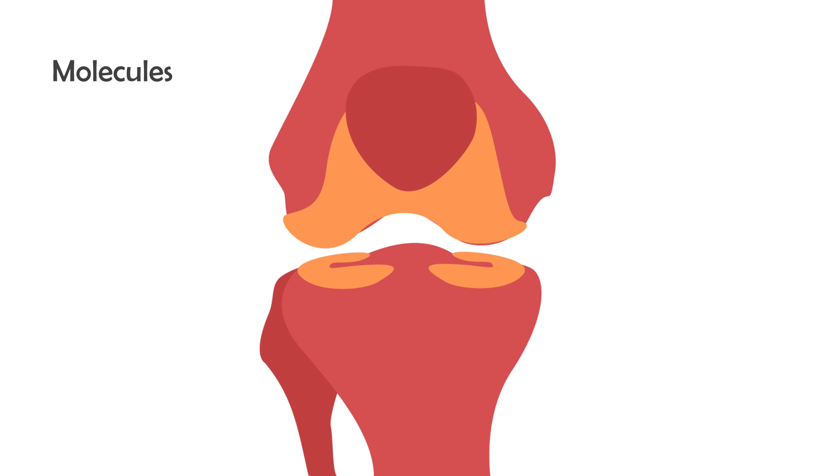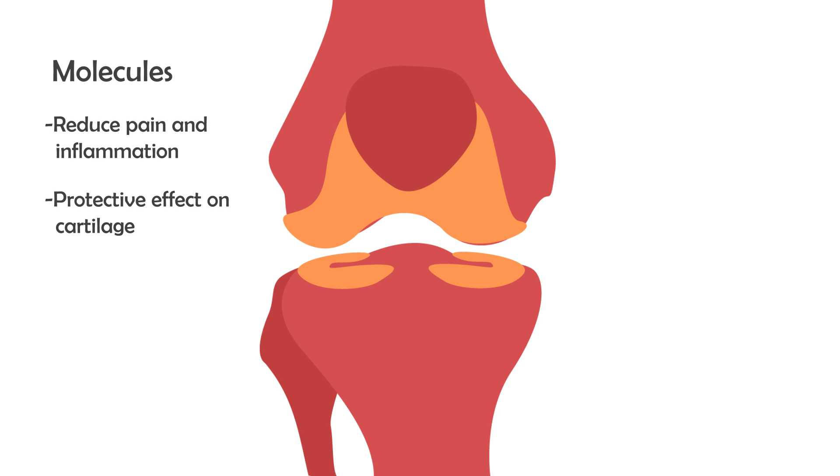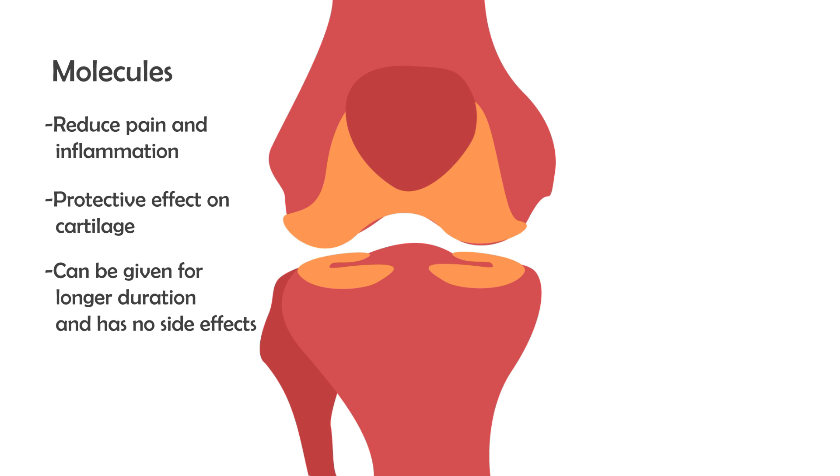What about the role of painkillers? Painkillers should be used very judiciously. Whenever there is severe pain, inflammation, and swelling of the joint, the patient may take painkillers on the advice of a doctor along with antacids — but only for about a week or a couple of weeks, because continuous use of painkillers may damage the patient's kidney and liver. Fortunately, nowadays we have molecules with a two-fold action that reduce pain and inflammation, have a protective effect on the cartilage, can be given for a longer duration, and don't have the side effects of traditional non-steroidal anti-inflammatory drugs.